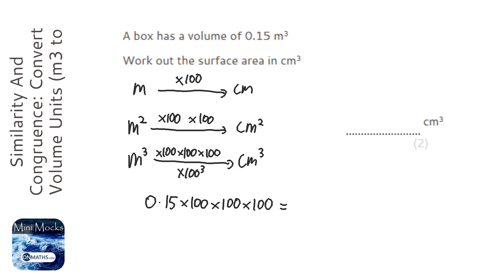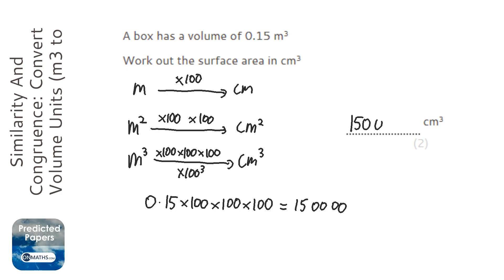So if we times it by 100 once, we get 15. Times by 100 again, we get 1,500. Times by 100 again, and we get 150,000. Now it looks like a really big number, but it is always going to be a really big number. When you are working with volumes and you are converting the units, you will always get a much, much bigger number.